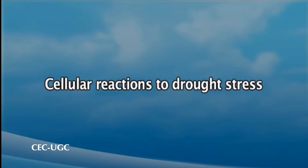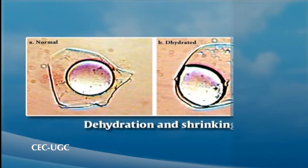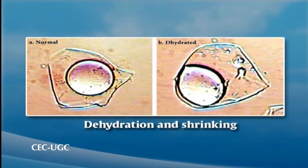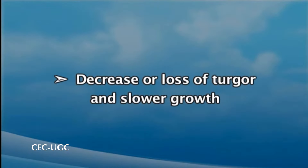An interesting question to understand is what kind of reactions at the cellular level do plants undertake in response to drought stress. Water loss may cause a number of responses at the cellular level. These generally include: first, dehydration and shrinking of the protoplast and subsequent reduction of the cell volume; second, concentration of cellular solutions, which become too much concentrated; and third, decrease or loss of turgor and slower growth.